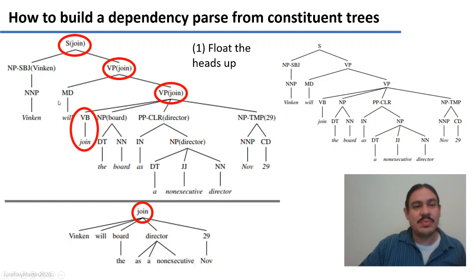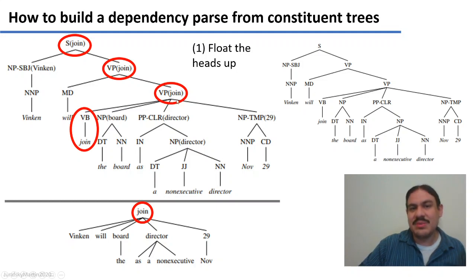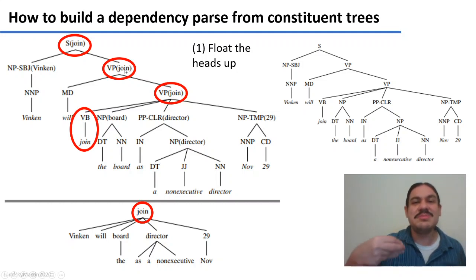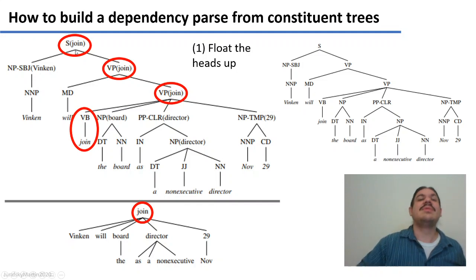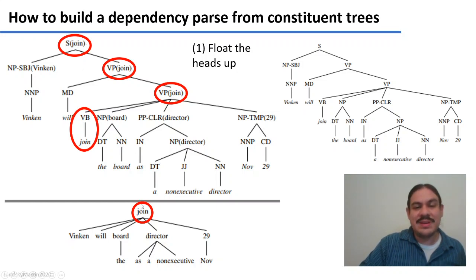'Join' will also be in a configuration with the auxiliary 'will', giving the structure 'will join', but 'join' is the head of that phrase because when you say 'will join' you're talking about joining something. We've determined that the verb is going to be the root of the sentence — the one that anchors everything — so we float the word 'join' up to be the head of the whole sentence, making 'join' the root node.